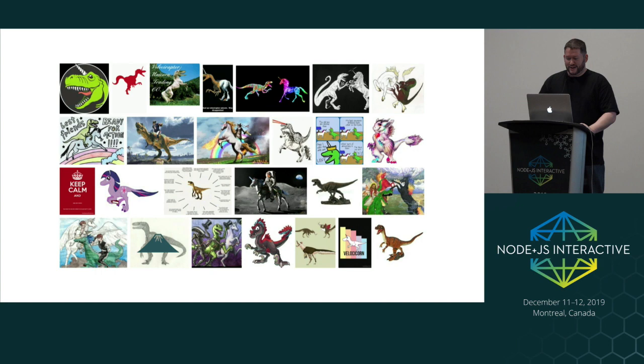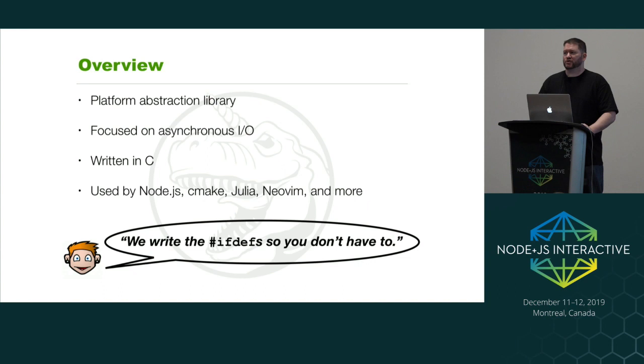What I'm talking about is LibUV, the platform abstraction library that Node.js sits on top of. LibUV is written in C — not C++, actually C89 — so it runs in most places. The point of the library is to do asynchronous IO. It's what gives Node its asynchronous IO operations, event loop, and things of that nature.